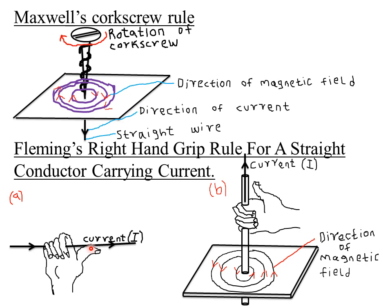With the thumb pointing along the wire in the direction of the conventional current — this is the thumb — if this is the direction of the current, point the thumb in the direction of the current. Then the right-hand grip rule predicts that the fingers will point in the direction of the magnetic field.